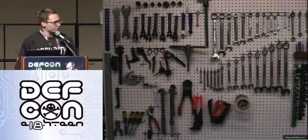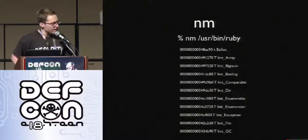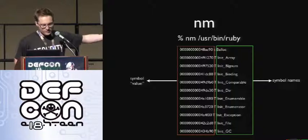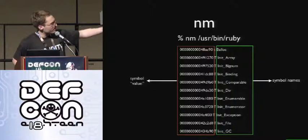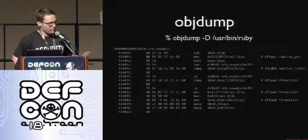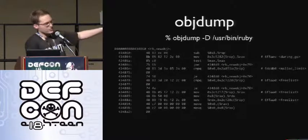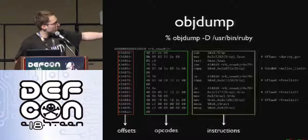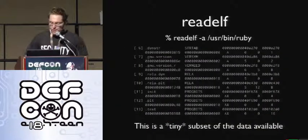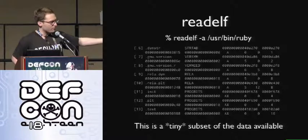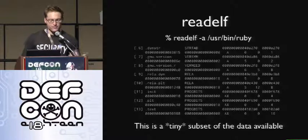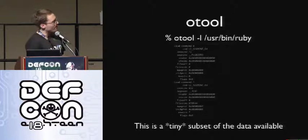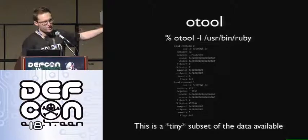Let's look at some useful tools for dissecting objects before we start writing code. NM is pretty useful — it comes on OSX and Linux. You run NM on your binary, you get symbol values on the left and symbol names on the right, and in the middle there's information about what type of symbol it is: local, global, undefined, whatever. Objdump is also useful — available on Linux; for OSX you have to go find binutils and build it. Running objdump on your Ruby binary gives you offsets on the left, opcodes, instructions, and then helpful metadata. There's also readelf for ELF objects on Linux, which outputs a huge amount of information. Otool is the complement on OSX.